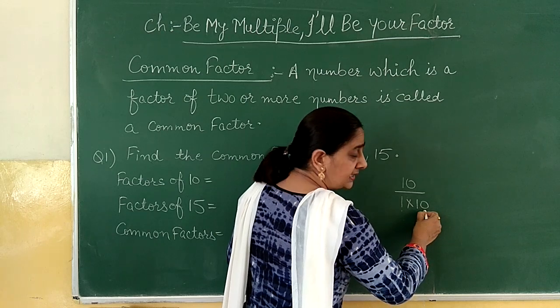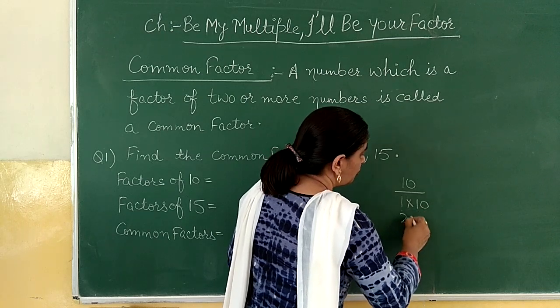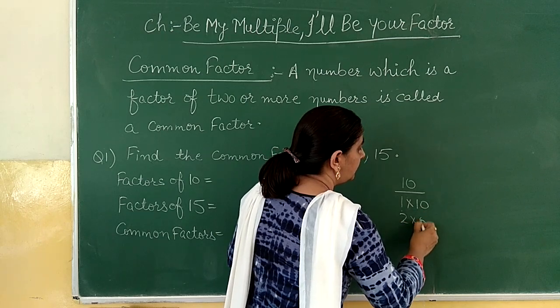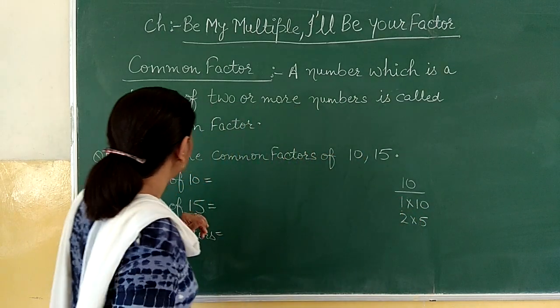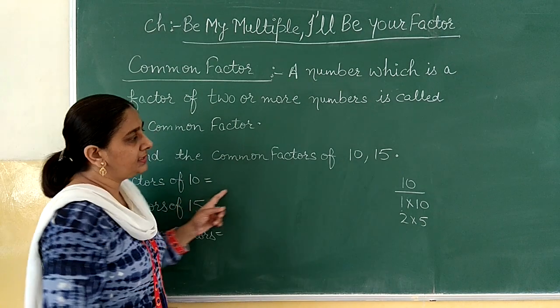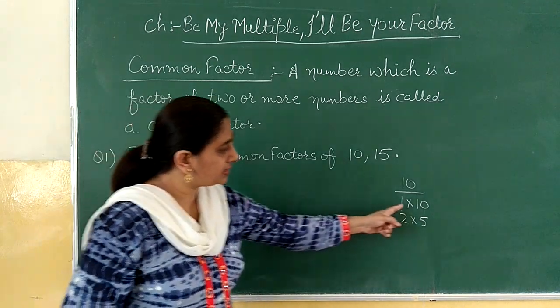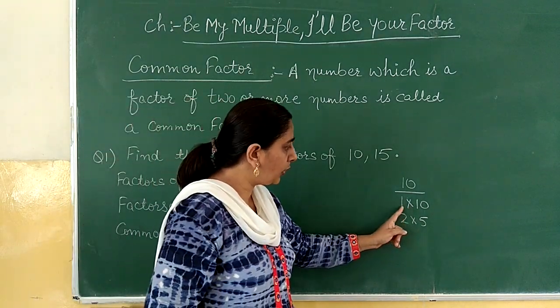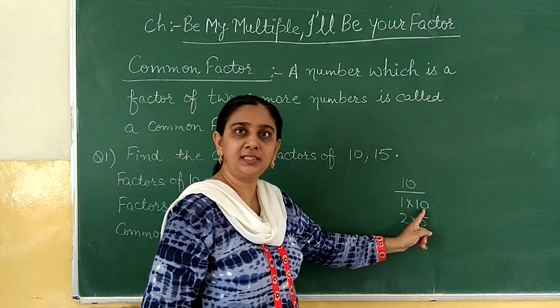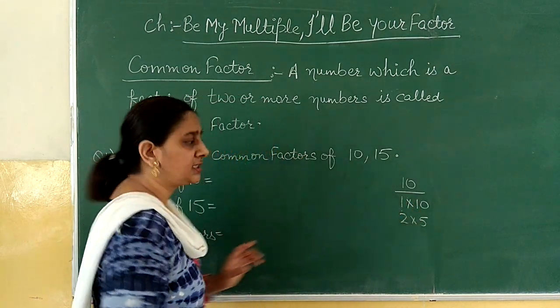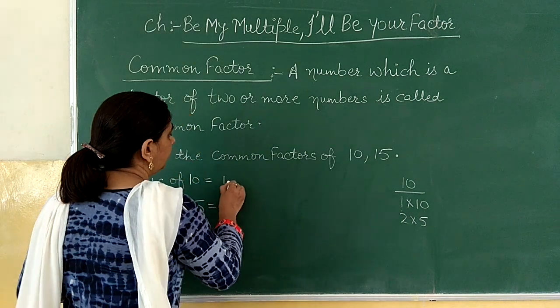One times ten is ten, two times five is ten. So from here, children, you can write all the factors of ten: one, two, five, ten. These are the factors of ten.